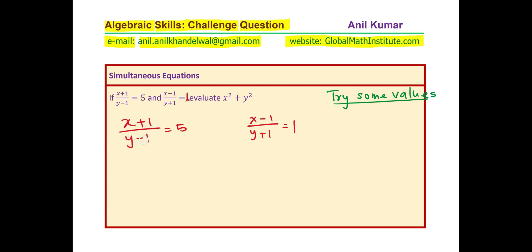x plus 1 divided by y minus 1 is 5. So, the numerator is 5 times the denominator. But if I subtract 1 in x and add 1 to y, we get the same number.